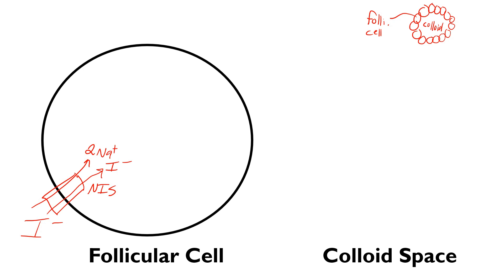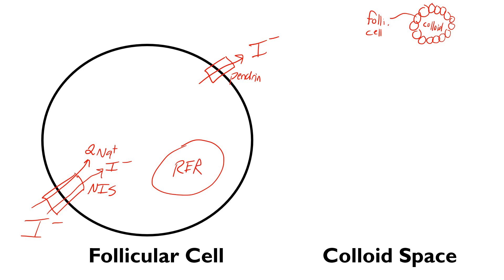Once the iodine is in the cell, the next step is for it to cross over to the other side of the follicular cell and enter into the colloid space. It does this through a transporter called the pendrin transporter. While that's happening, the rough endoplasmic reticulum of the follicular cell — the site where protein production happens — is producing something called thyroglobulin, a protein that is also sent out into the colloid space.